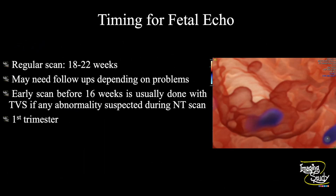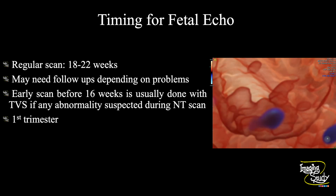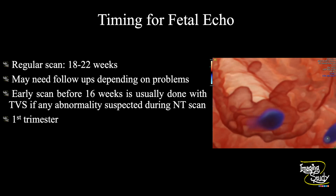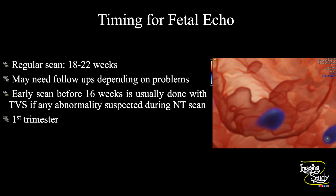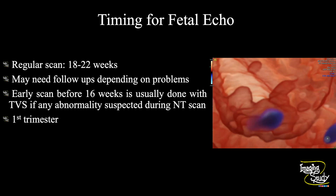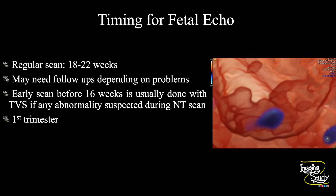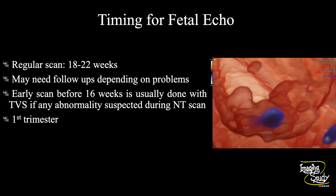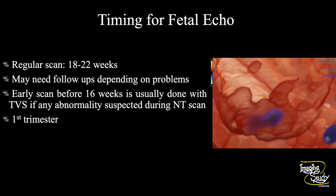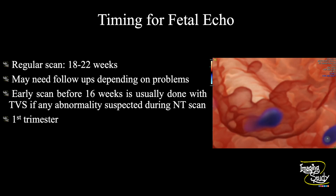We commonly perform fetal echocardiography during the second trimester anomaly scan, like 18 to 22 weeks. This is the regular scanning time, but if needed you can do it earlier or later. Sometimes the heart looks very small in obese patients at 18 to 20 weeks. So if we suspect any abnormality or further evaluation is needed, we do follow-ups after one or two months depending on the level of suspicion.